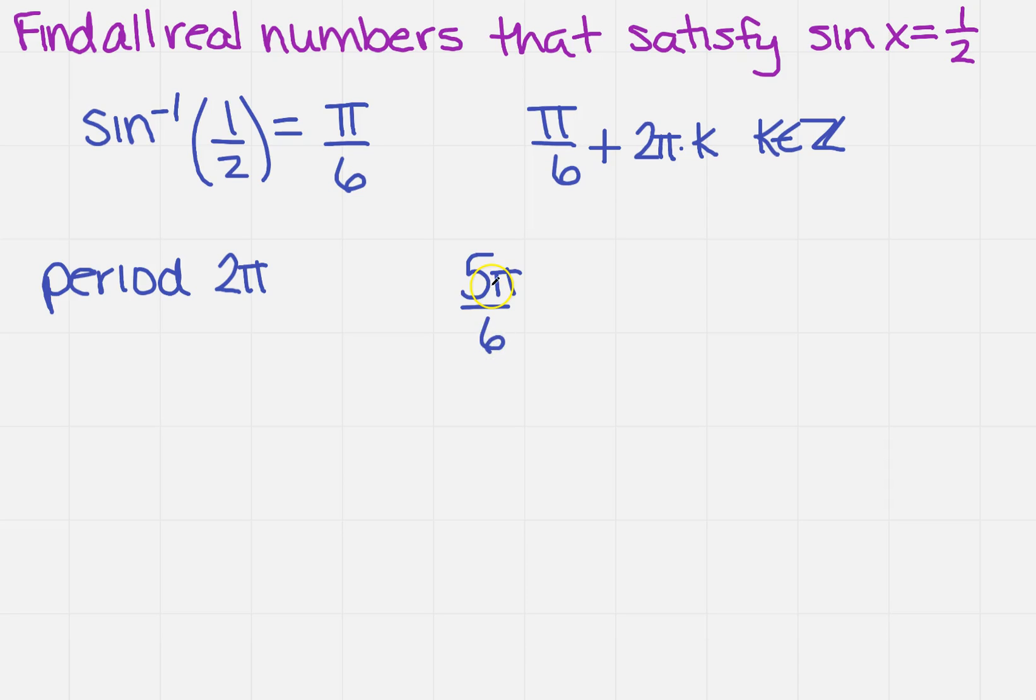So if that's the case, I still need to write out that formula, so it's going to be plus—it's still a period of 2π—multiply it by k for any k that is an integer.